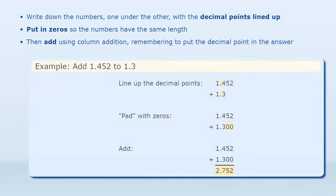Example: add 1.452 to 1.3. Line up the decimal points, pad with zeros, then add. The answer is 2.752.